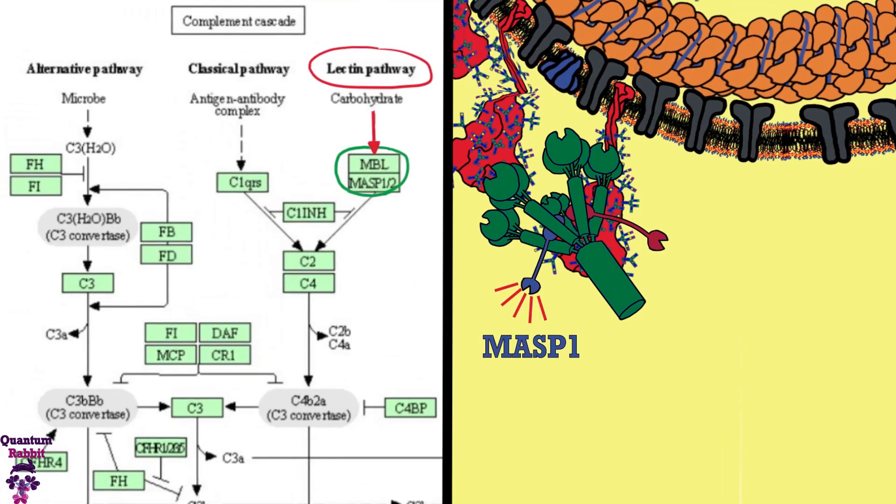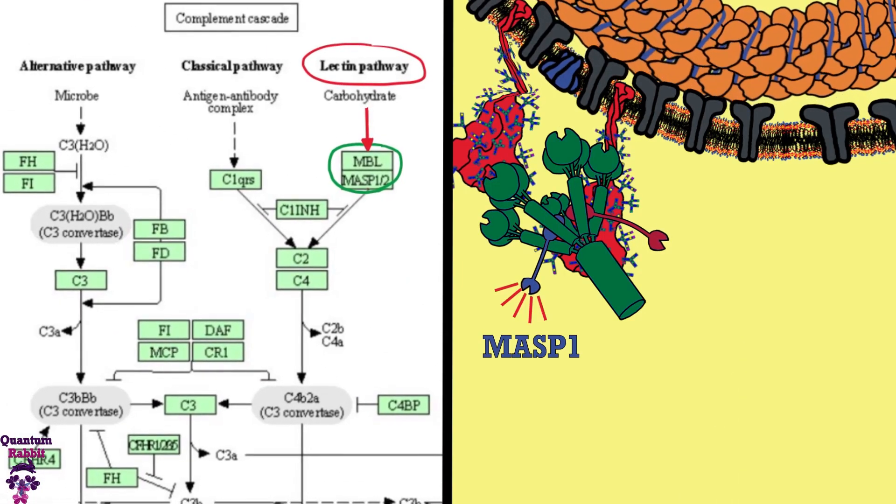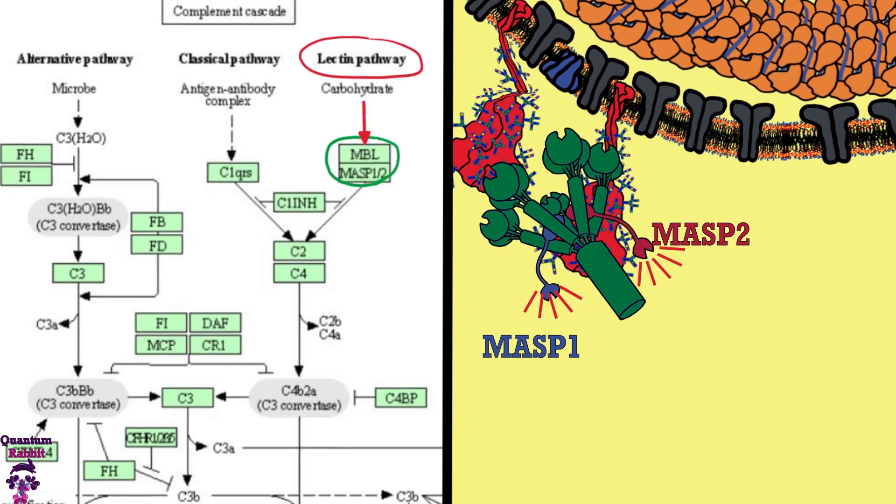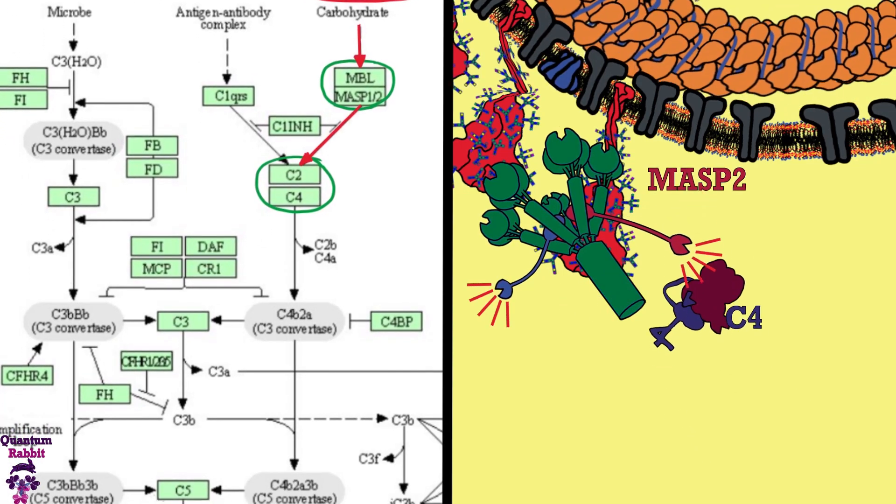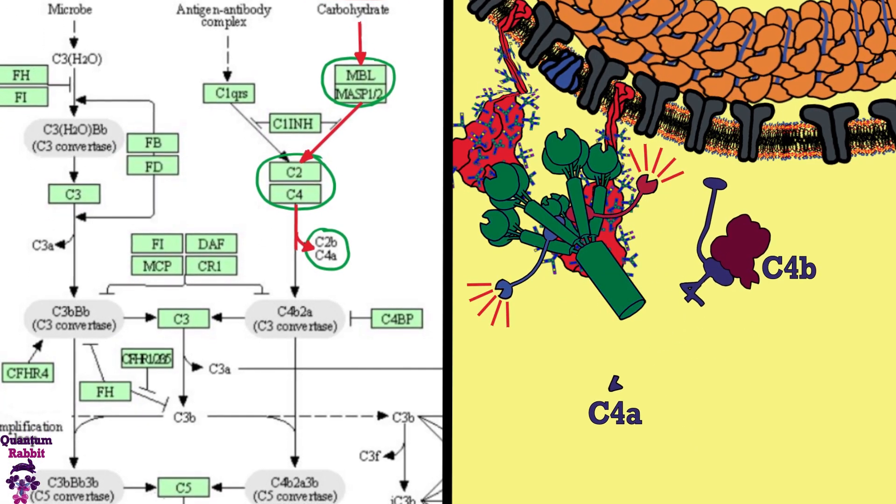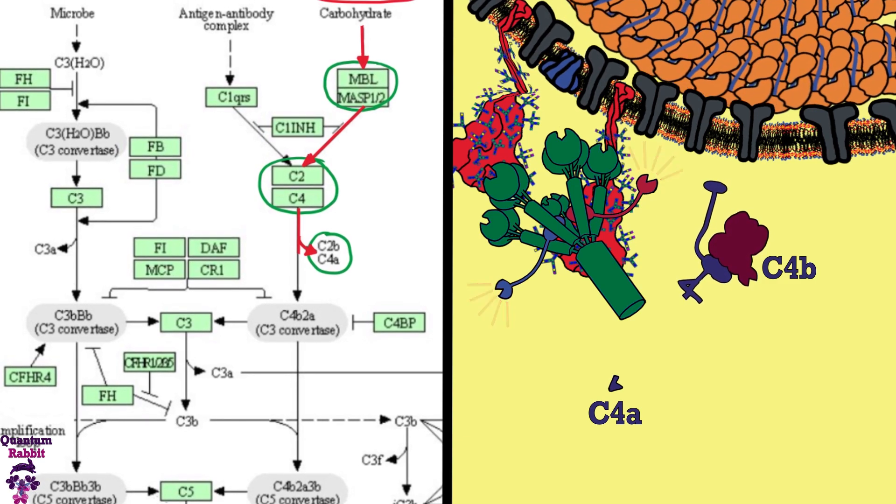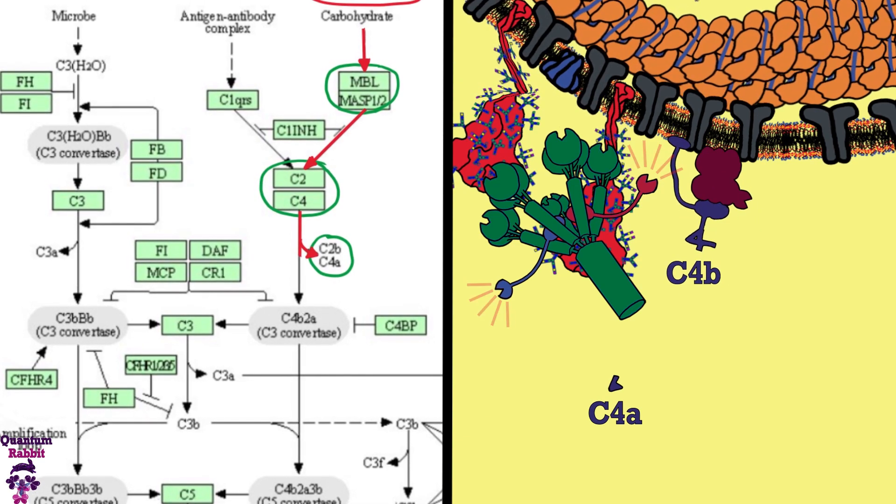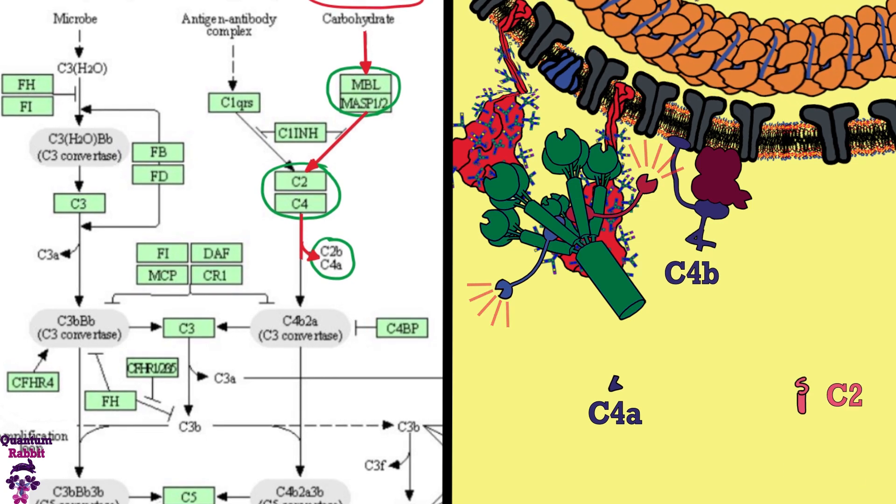MASP1 hydrolyzes and activates the protease MASP2. MASP2 cuts and activates the C4 protein in two parts, the C4a and the C4b. The C4b part is covalently attached to the virus membrane. Then C2 binds to C4b and is hydrolyzed by MASP2 in two parts, C2a and C2b.